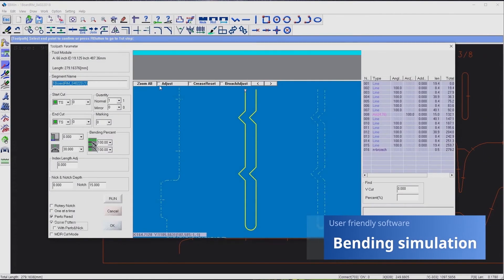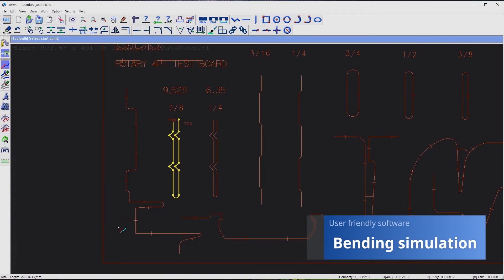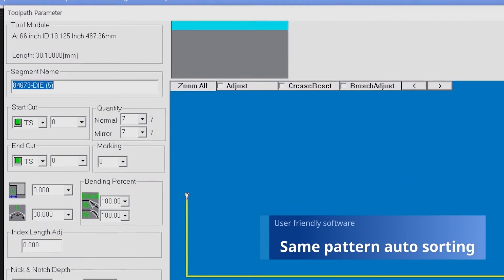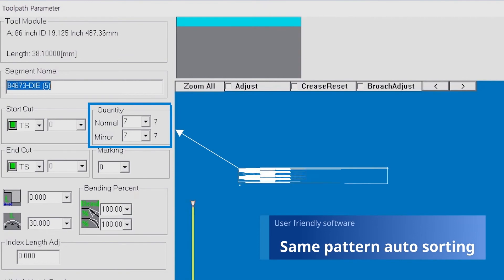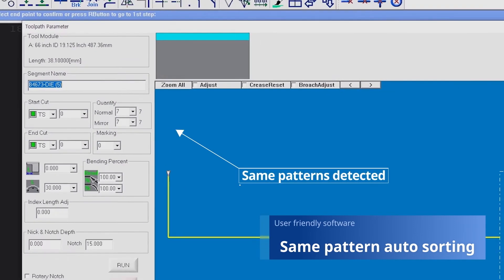Using a graphical simulation, operators can identify challenging segments and make adjustments before processing pieces. Auto detection of the same shapes through a CAD file eliminates the need of counting the total number of same pieces.